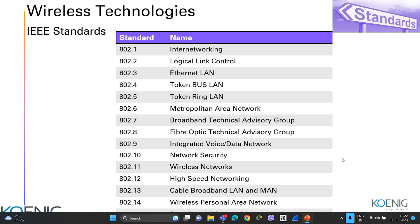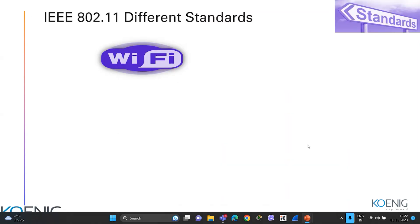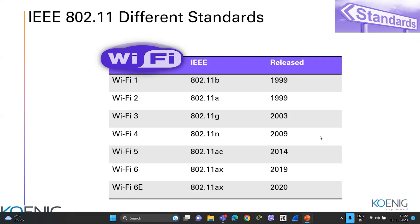802.11 has a number of standards: 802.11b, then 'a', 'g', 'n', 'ac', and currently we're using Wi-Fi 6 and Wi-Fi 6E — the enhanced version of Wi-Fi 6, designated as 802.11ax. Wi-Fi 6E is capable of emitting frequencies at both 2.4 GHz and 5 GHz. This is the latest Wi-Fi technology in the wireless standard.